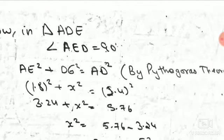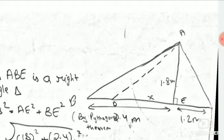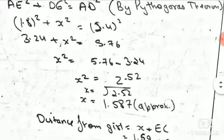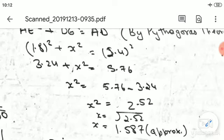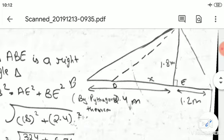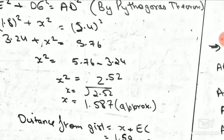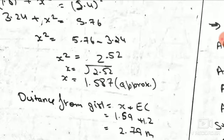90 degree. AE squared plus DE squared equals AD squared. 1.8 squared is 3.24, and 2.4 squared is 5.76. 5.76 minus 3.24, x squared equals 2.52. x equals 1.587 approximately.